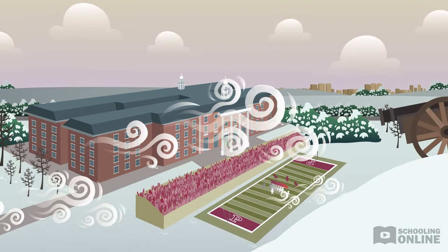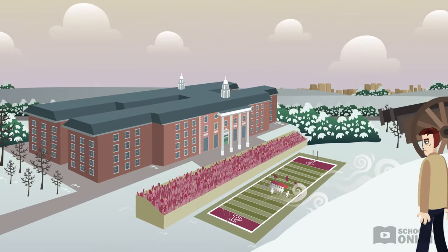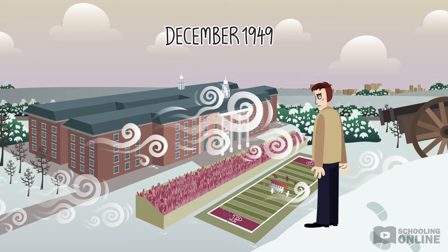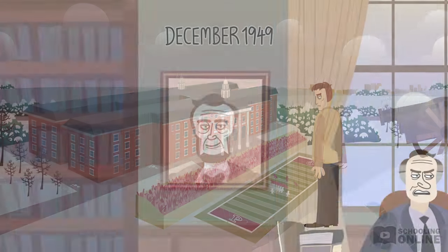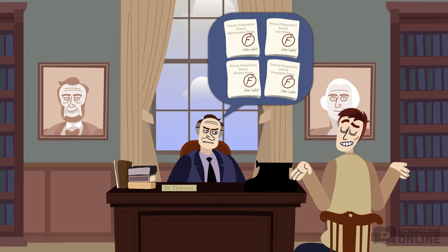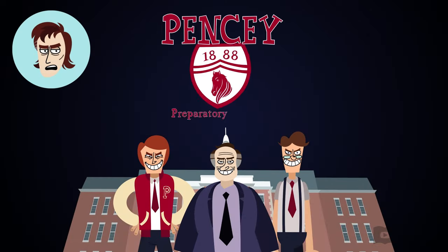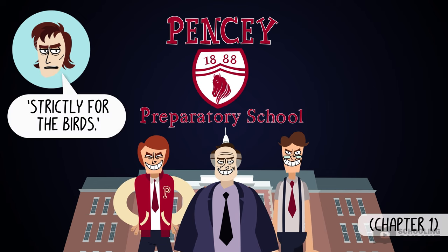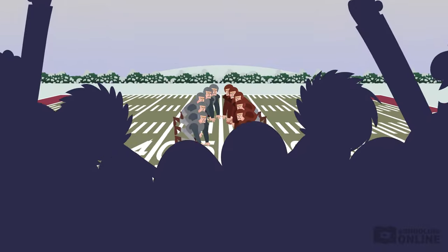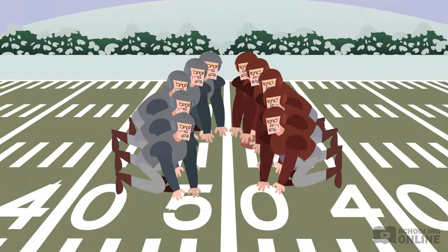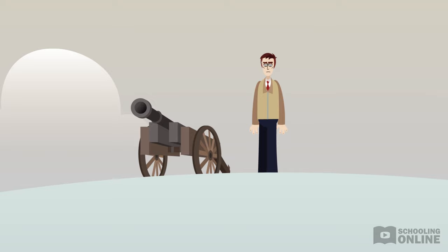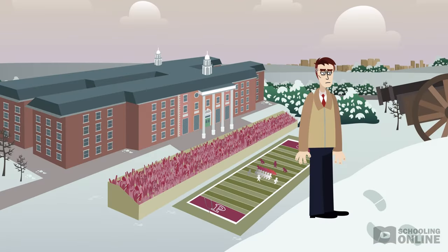Holden's story begins on his last day at Pensy Prep back in Pennsylvania. It was December 1949, and he was preparing to leave. He'd been kicked out for his poor grades, but he wasn't too phased about it. Pensy is a fancy school, but according to Holden, it's full of phonies and crooks. It was the day of the grand final football game, Pensy Prep versus Saxon Hall. Big deal. Holden didn't stay to watch the whole thing, just enough to get a sense that he really was leaving.